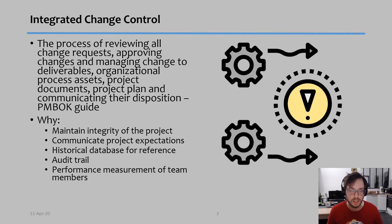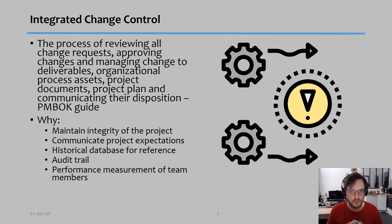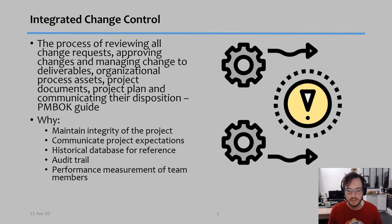So why do we have this process? We cannot accept every single change that is requested for a variety of reasons. The process exists in order to maintain the integrity of the project but also to communicate project expectations — these are the two most important points, because it really is to make sure that the project is going in the right direction.